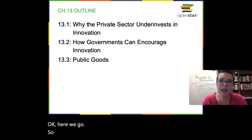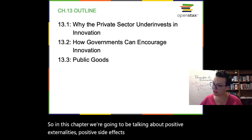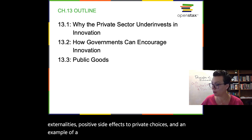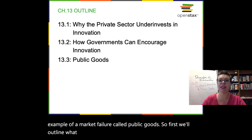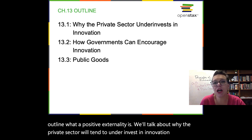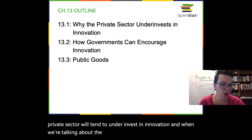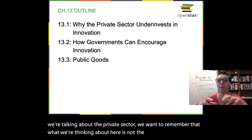In this chapter, we're going to be talking about positive externalities — positive side effects to private choices — and an example of a market failure called public goods. First, we'll outline what a positive externality is. We'll talk about why the private sector will tend to underinvest in innovation. When we're talking about the private sector, we want to remember that what we're thinking about here is not the government.